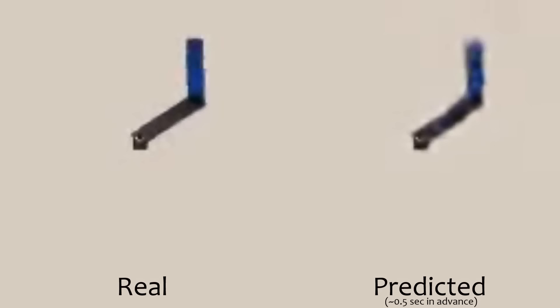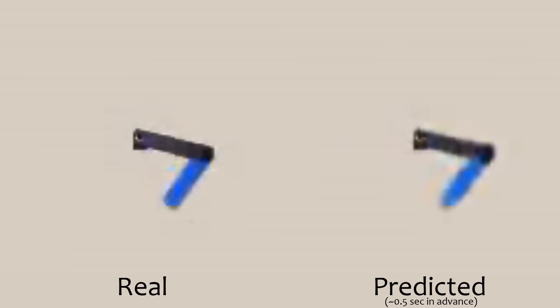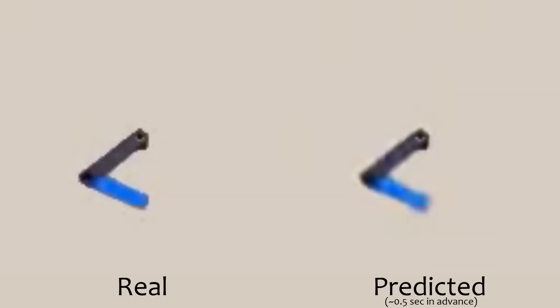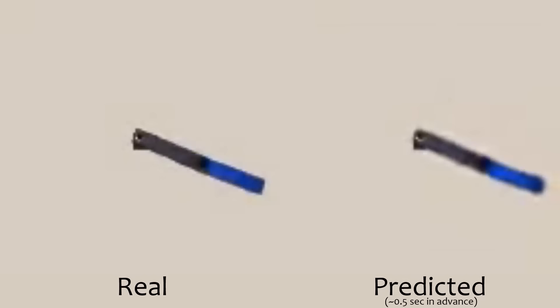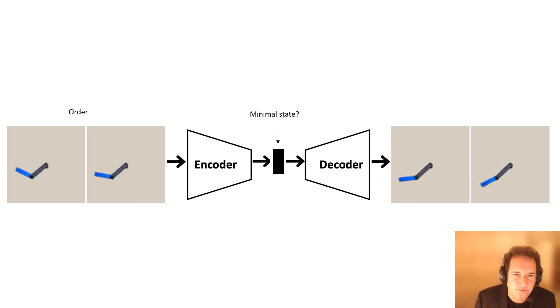We took a deep learning system and had it look at sequences of frames and try to predict what the future frames are going to do. We trained the system to do that, and eventually, we got the AI system to predict what the video is going to look like. Obviously it understands something about the dynamics.